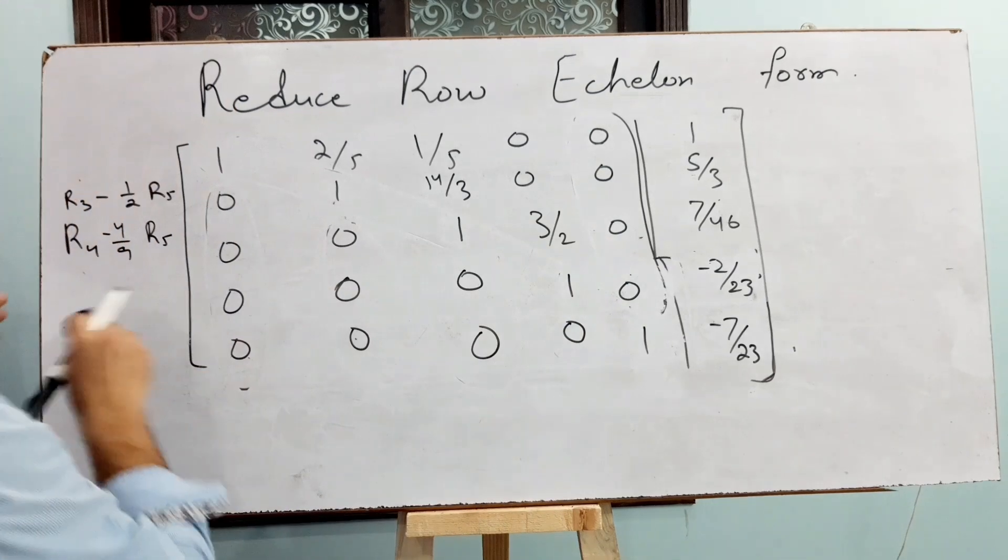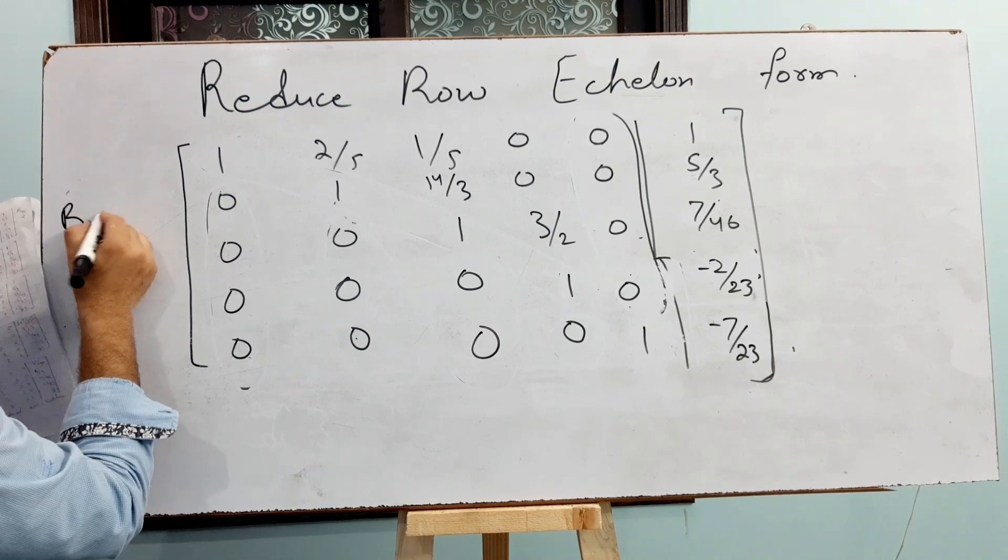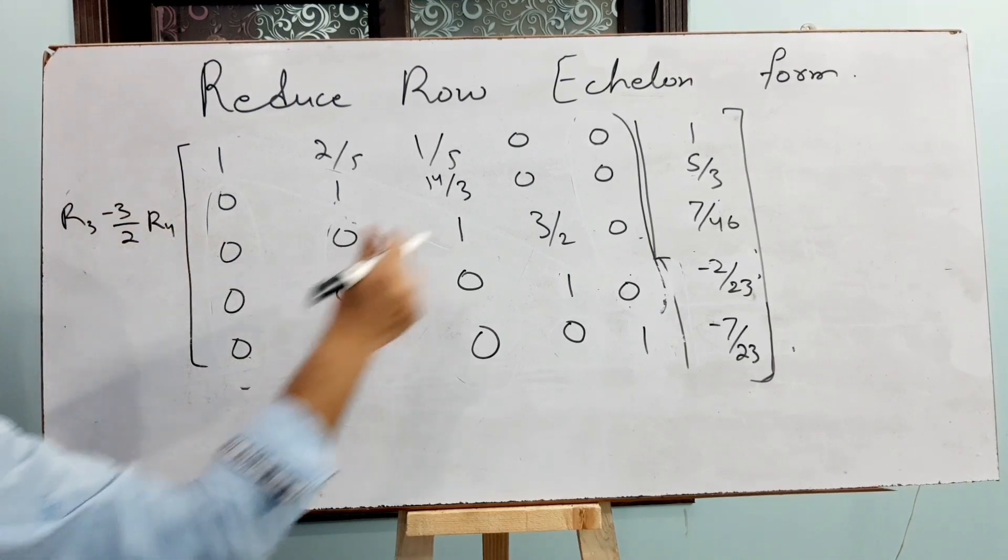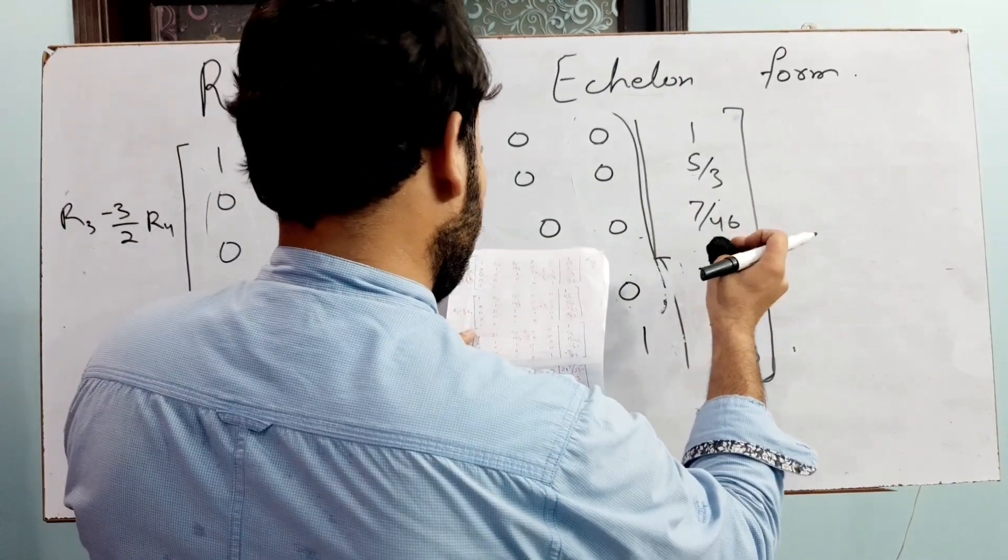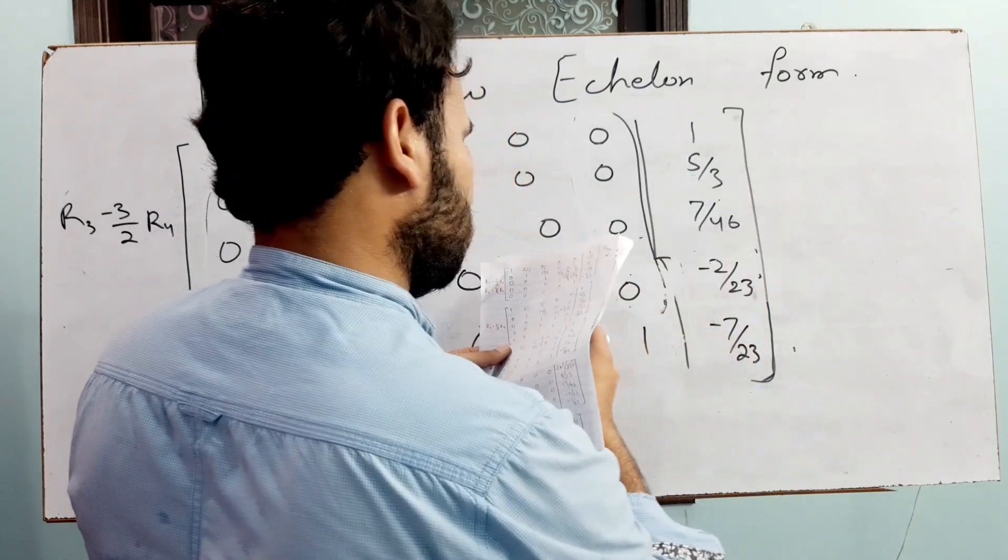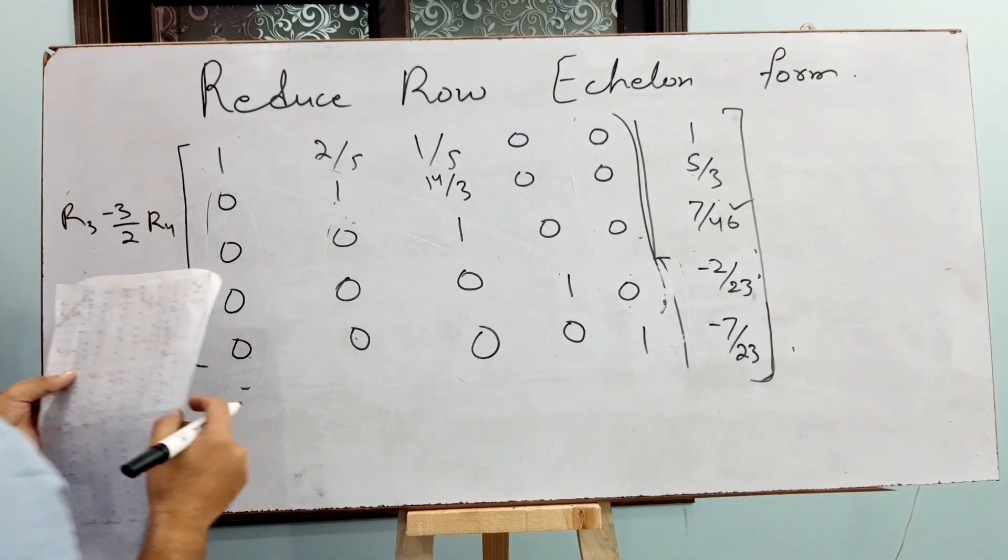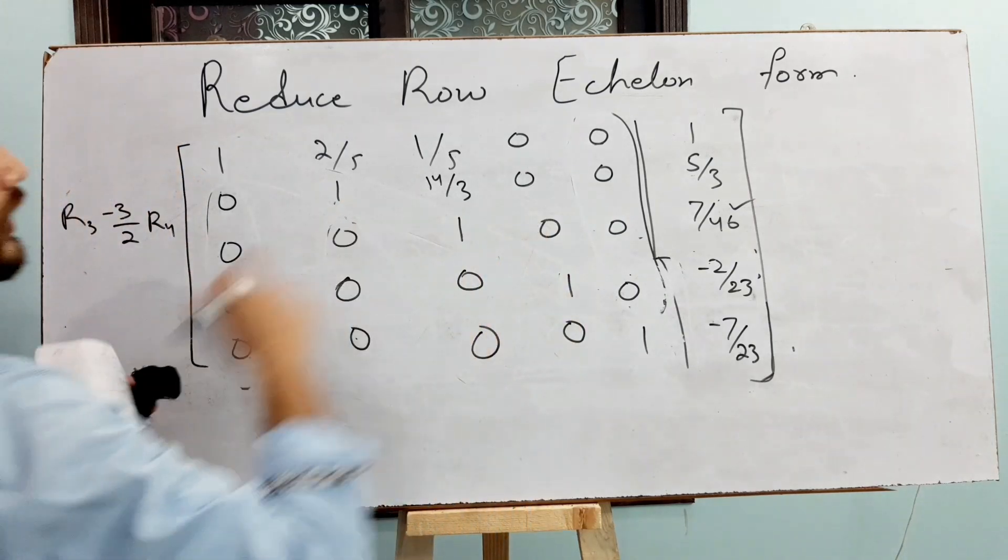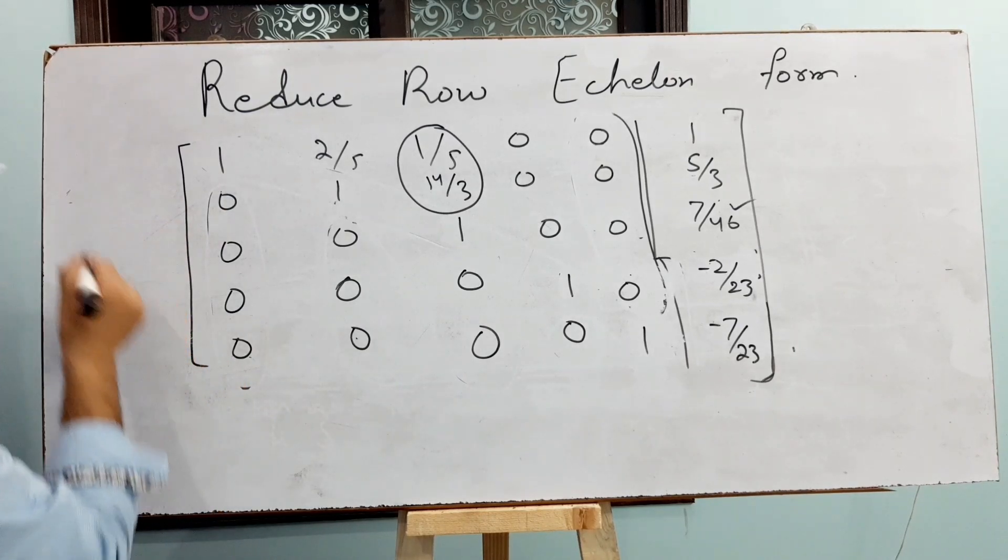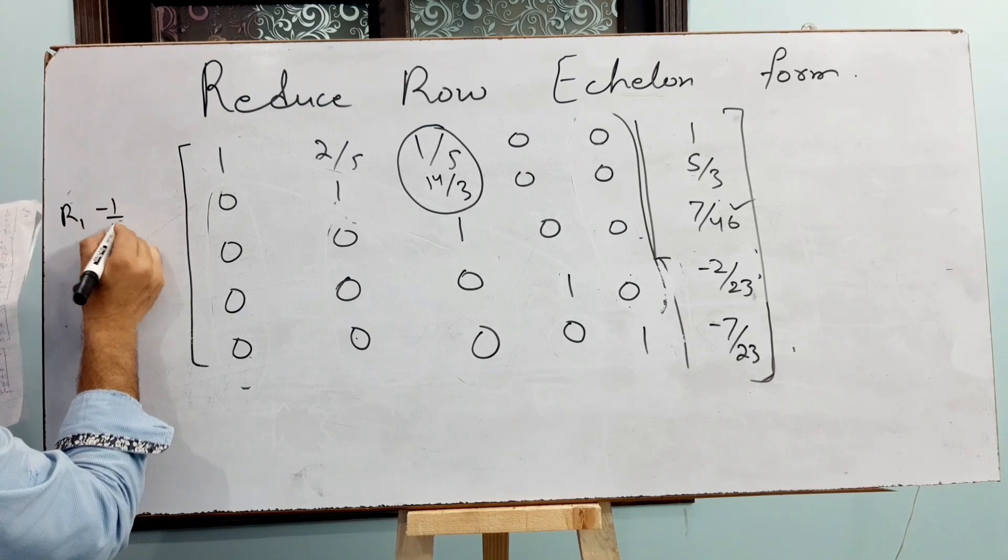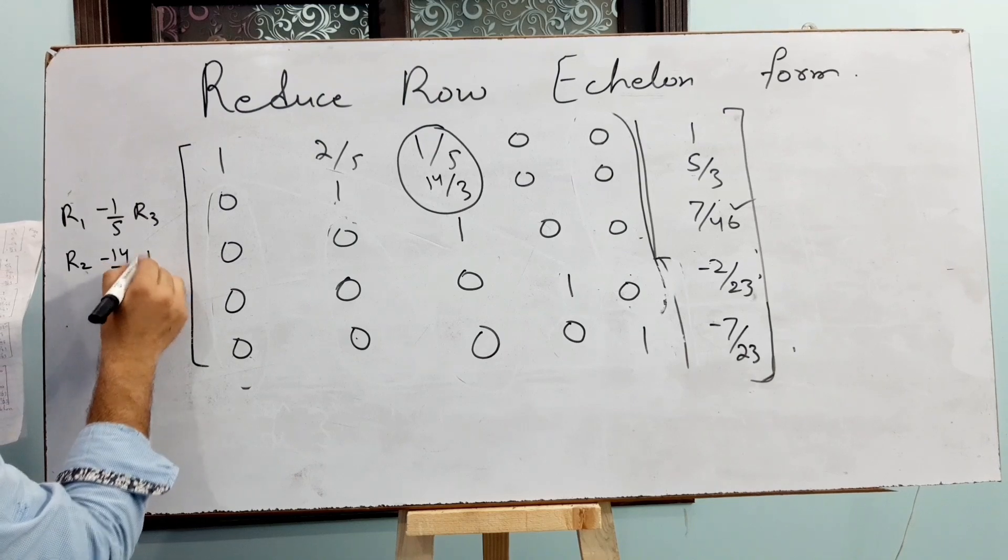Now, making this one 0, just adding R3 minus 3 by 2 times R4. So this entry will be 0 and this will be 5 by 3. This will be 10 by 46. Now these 2 entries should be 0. For making 0, applying operation R1 minus 1 by 5 times R3 and R2 minus 14 by 3 times R3. Then these 2 entries will be 0 and this result will be 207 by 230 and this is 8 by 23.